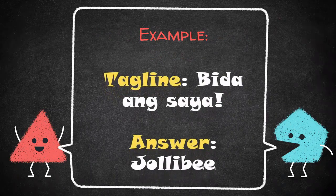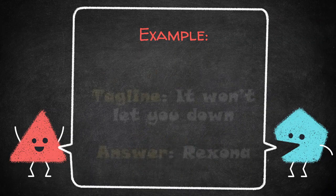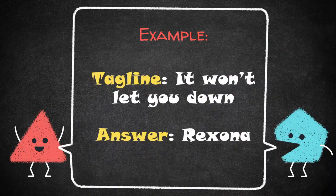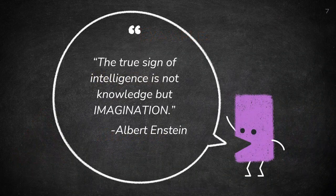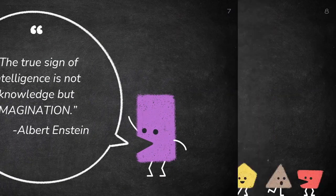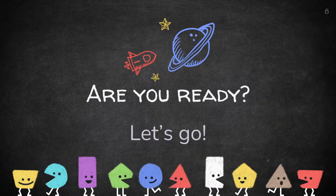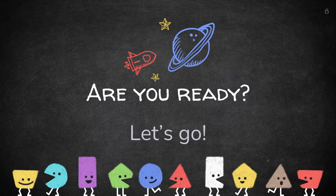Let's have the example first. The tagline 'Bida 'Ansaya' — correct, it's Jollibee, everybody knows it. Next tagline: 'It won't let you down' — correct, the answer is Rejoice. Remember, according to Albert Einstein, the true sign of intelligence is not knowledge but imagination. Let's go, I think everybody's ready.